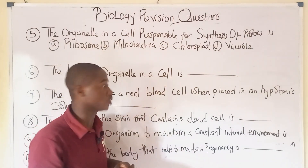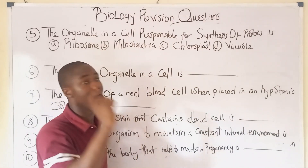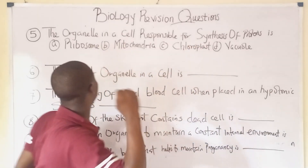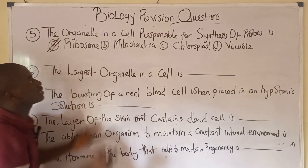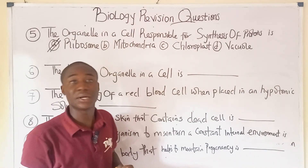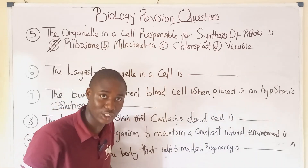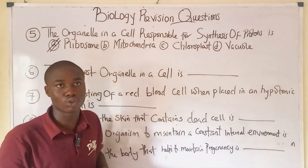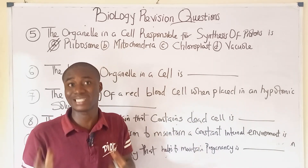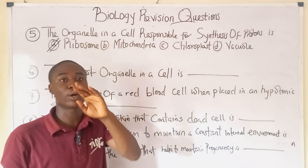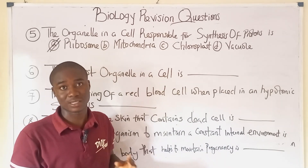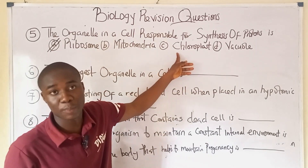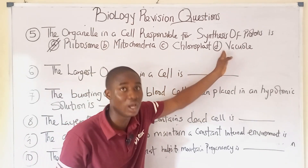Question five: the organelle in a cell responsible for the synthesis of proteins is the ribosome. The mitochondria is a different organelle — it helps in the production of chemical energy in the form of ATP, adenosine triphosphate, and is called the powerhouse of the cell. The chloroplast is the kitchen house of the cell, helping in the production of food for plant cells using the chlorophyll pigment. The vacuole helps in the storage of food.